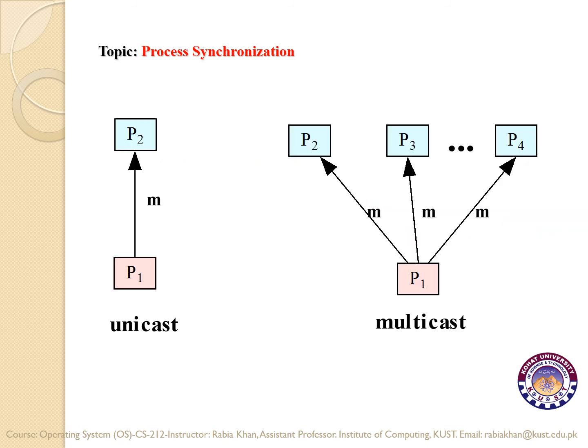This diagram shows unicast and multicast. If the communication is from one process to another single process, it is known as unicast. If the communication is from one process to a group of other processes, it is known as multicast.